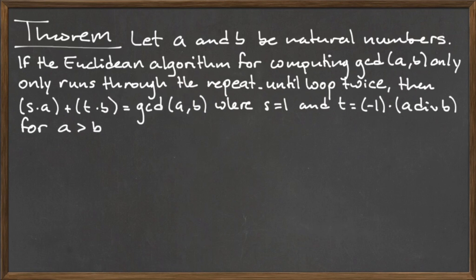Let a and b be natural numbers. If the Euclidean algorithm for computing the gcd of a and b only runs through the repeat loop twice, then Bézout's identity guarantees the solutions s equals 1 and t equals negative 1 times the quantity a div b, so long as a is greater than b.